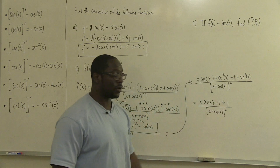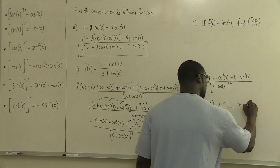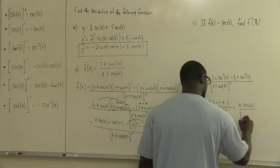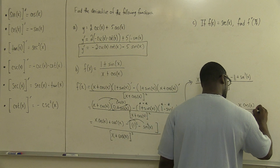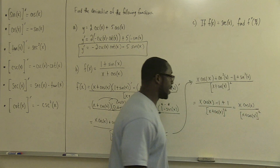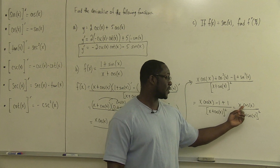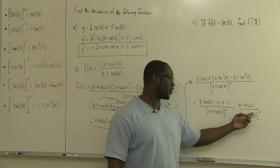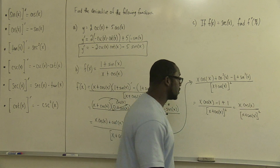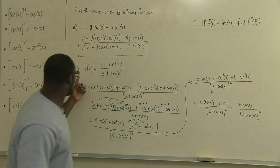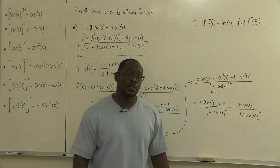There's nothing else we can do here because the numerator contains x times cosine x, not x plus cosine x, so there is no common factor between the numerator and denominator. This is where our answer stops. For our function f of x, this is what its derivative looks like.